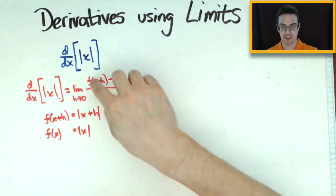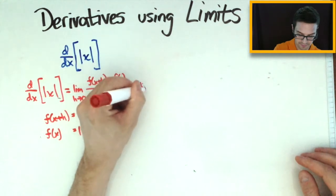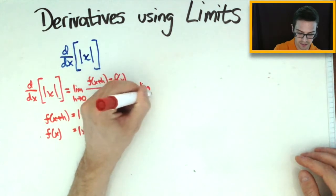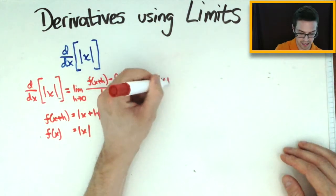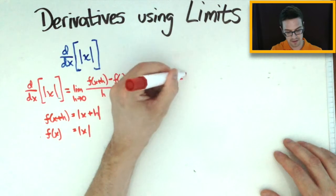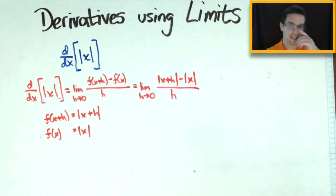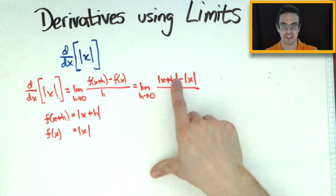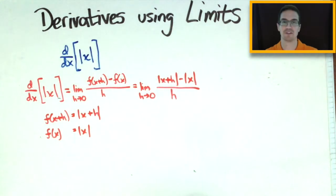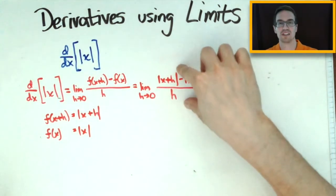Next I'm going to take these two values and substitute them into our limit definition. So we're going to have the limit as h goes to zero of the absolute value of x plus h, minus the absolute value of x, all over h. There's not much we can do here — if you try direct substitution with h equal to zero, you'd end up with zero over zero.